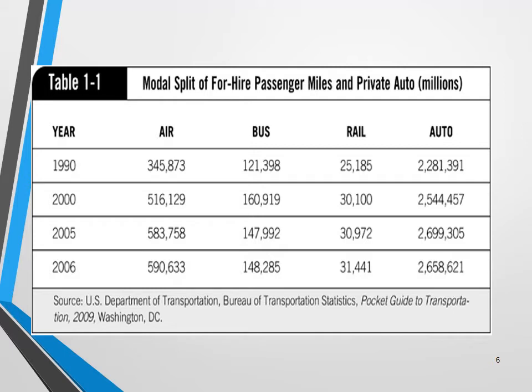In the previous slide we talked about aggregation of measurement by modes. In this table we look at different modes for passenger transportation, where the unit of measurement is passenger-miles. We see four modes: air, bus, rail, and auto. In 1990, auto has by far the biggest share compared to air, bus, and rail. In 2006, auto is still the biggest share, but we see growth across all modes, with the air mode showing probably the biggest growth.